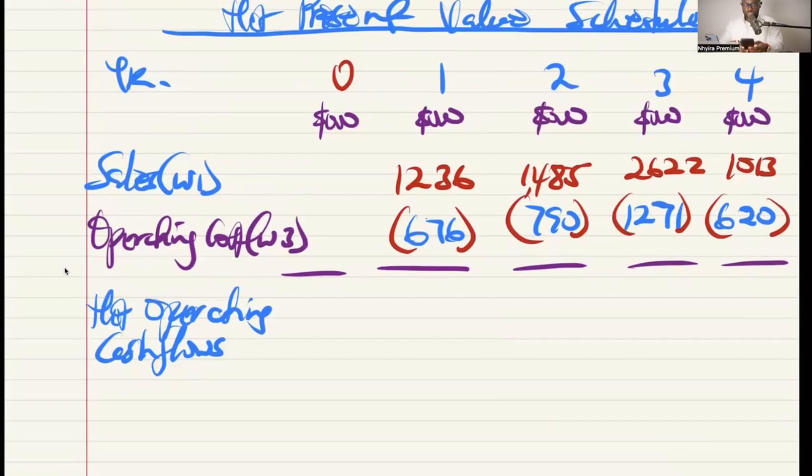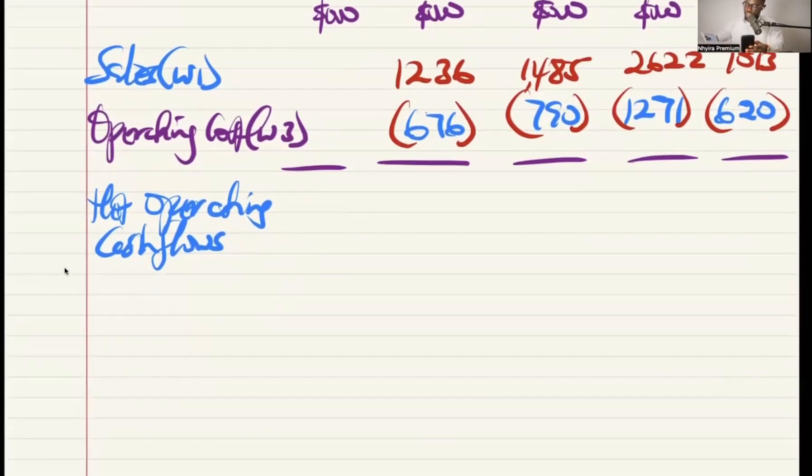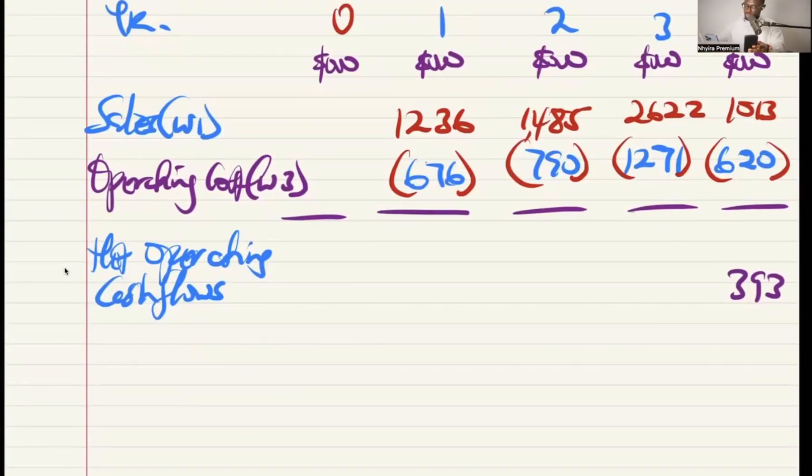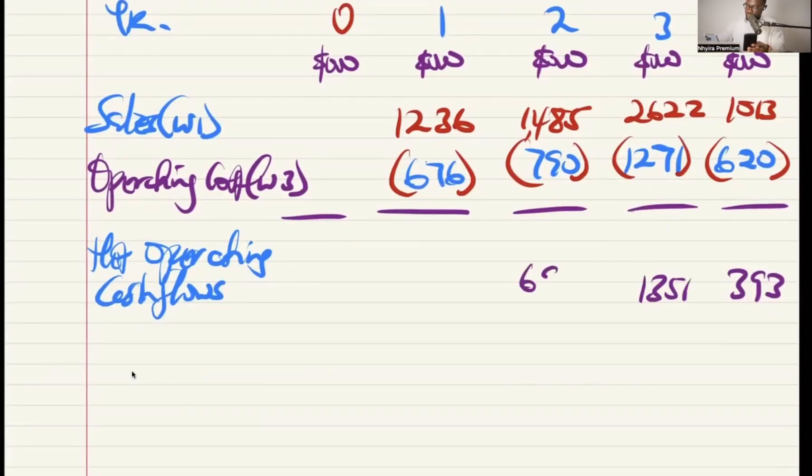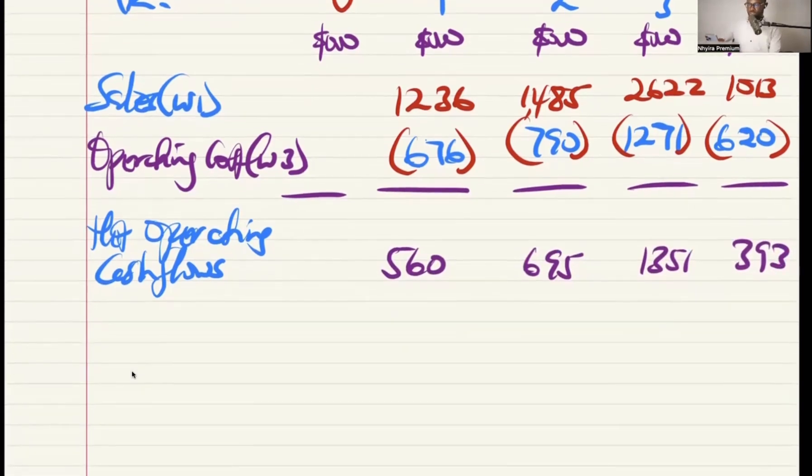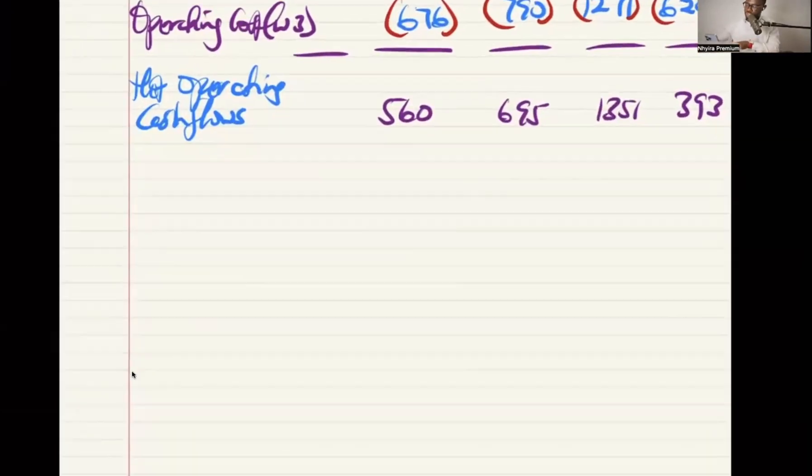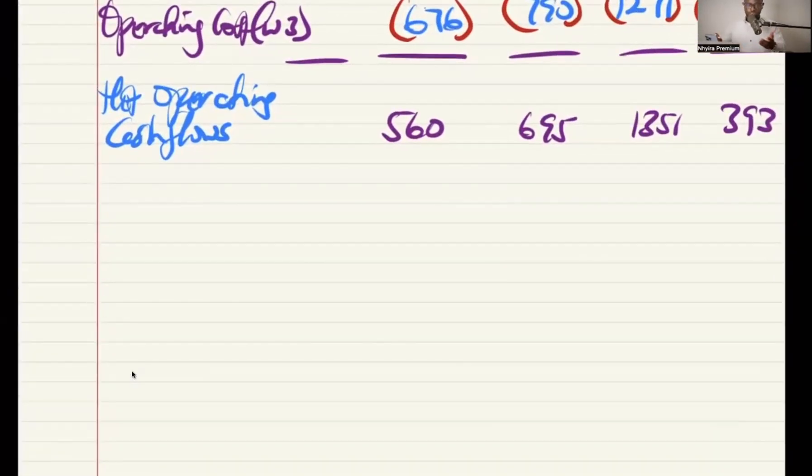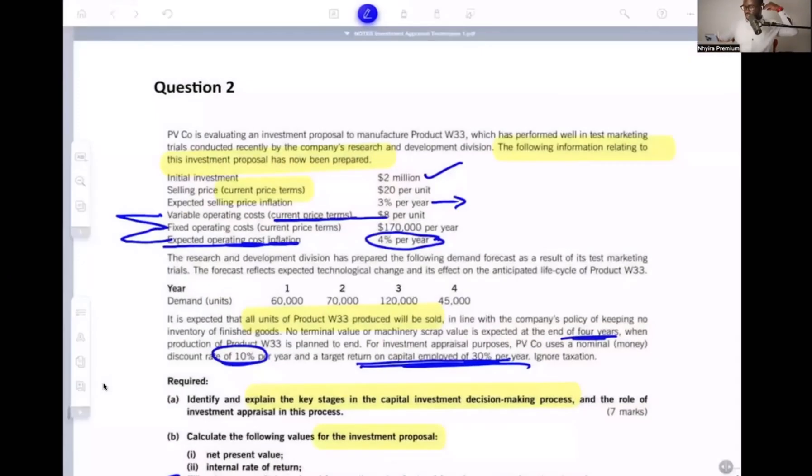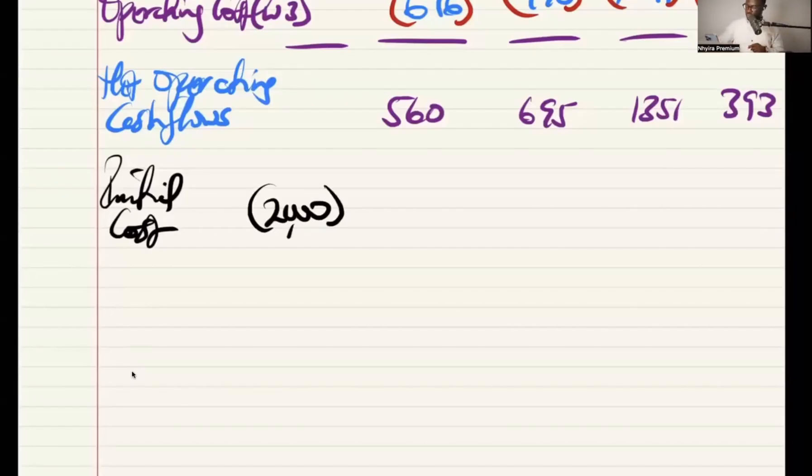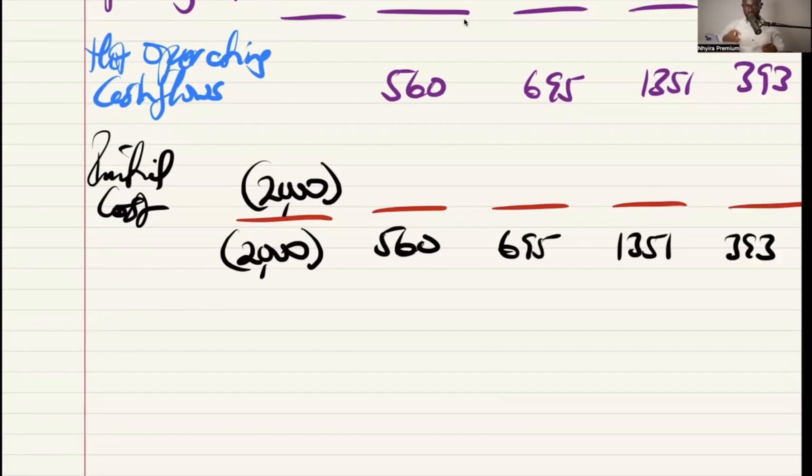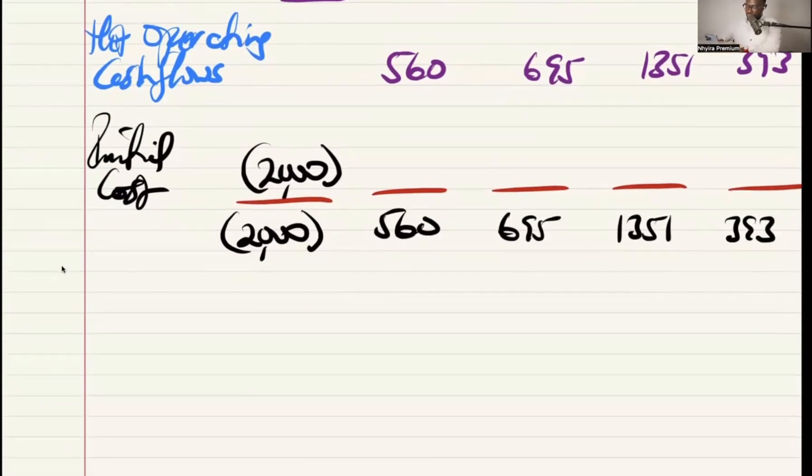So what do we have? 560, 695, 1,351, 393. So this is our net operating cash flows. There is no tax. So no cost for alarm here. We'll just go in and bring in the other issues like the initial cost. Which we are told is 2 million. So that's going to be 2,000 outflow. There's no scrap value. There's no working capital. There's nothing. So we're done. So that's going to be our net cash flows. Now this is net operating cash flows. This is net cash flow.